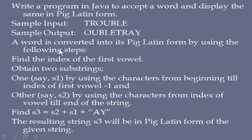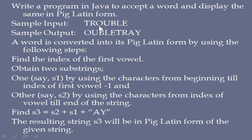You will see the description of how to convert this. A word is converted into its Pig Latin form by using the following steps. First, find the index of the first vowel. Here in TROUBLE, the index of the first vowel is the third character, that is O. Then obtain two substrings: variable S1, using the characters from the beginning till the index of the first vowel minus 1 — that means storing the characters from position 0 till the character before the vowel, so TR alone.